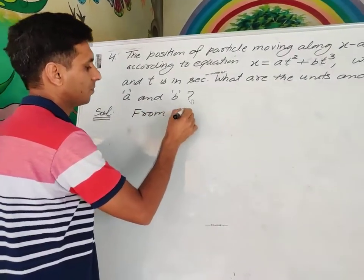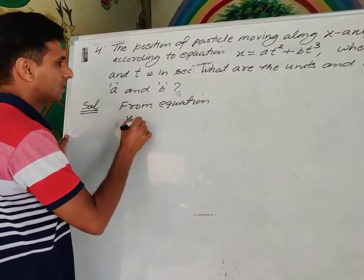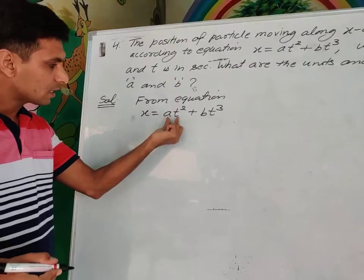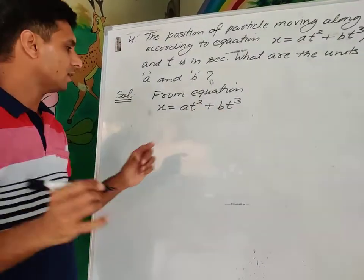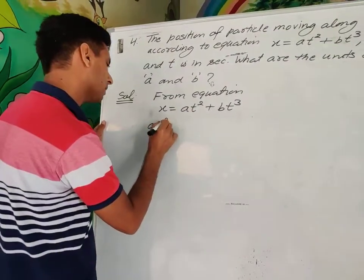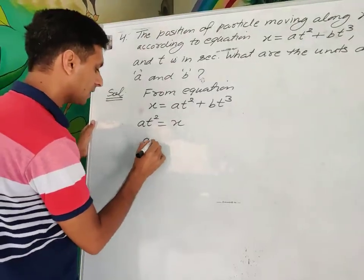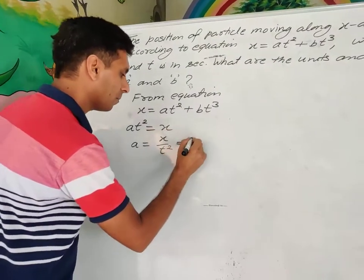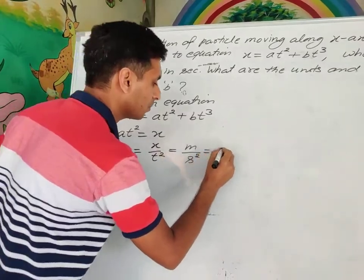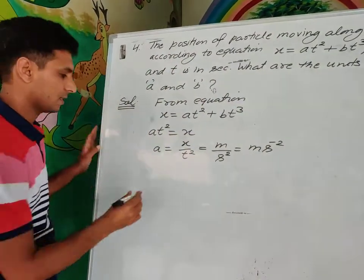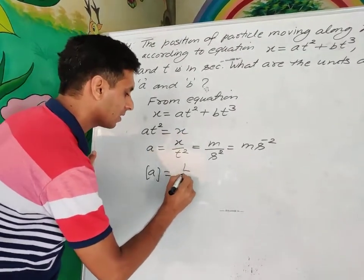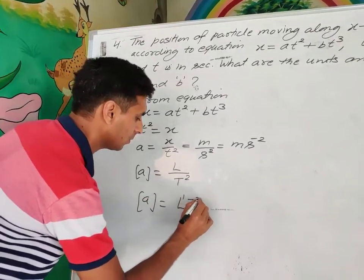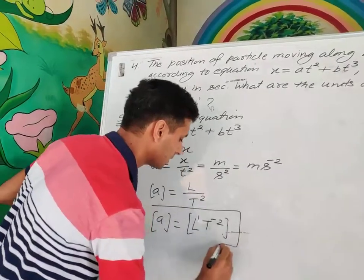From the equation x = At² + Bt³, since x is distance, each term must also equal distance. For A: At² = x, so A = x/t² = meters/seconds² = m/s². Dimensions of A: L¹T⁻², which represents acceleration.